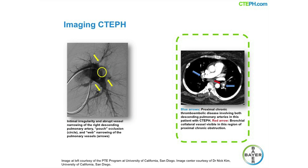CTPA, computed tomographic pulmonary angiography, is also used in operability assessment. The higher resolution images of CTPA provide additional details for assessing operability, such as vascular wall thickness and surrounding structures that are not well appreciated by conventional angiography. CTPA can also reveal associated findings suggestive of CTEPH, such as bronchial artery collaterals and a mosaic perfusion pattern.